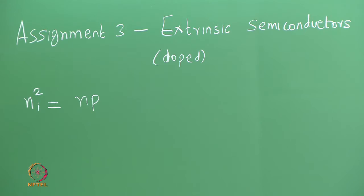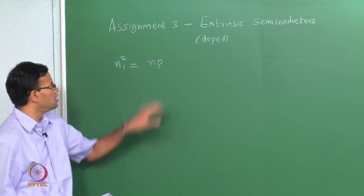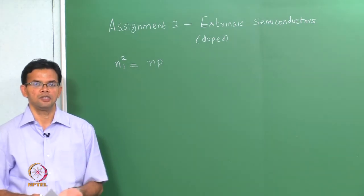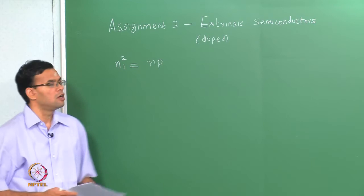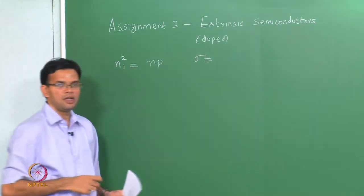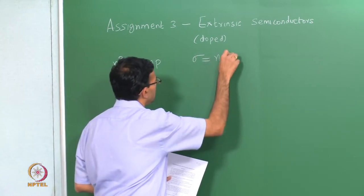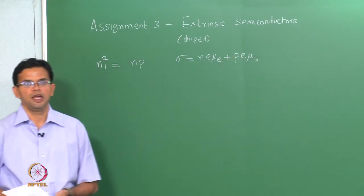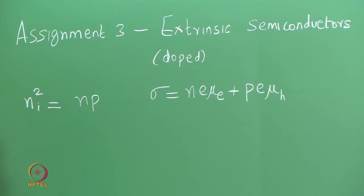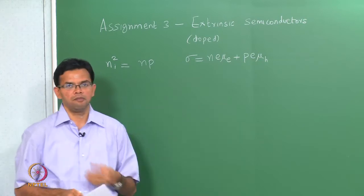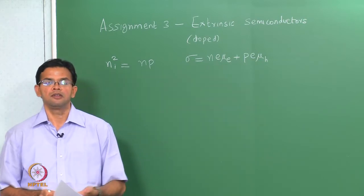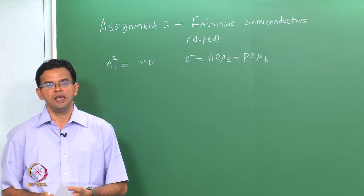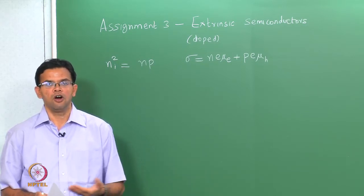If we dope with donor type impurities to increase the concentration of electrons, if n goes up, p has to go down. Similarly, if p goes up by doping with acceptors, then n has to go down. We also saw the conductivity equation: sigma = n·e·μ_e + p·e·μ_h. In the case of an extrinsic semiconductor, we usually dope such that either n is much greater than p or p is much greater than n, so only one of these terms will usually dominate.